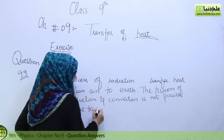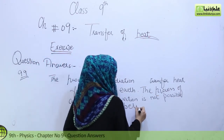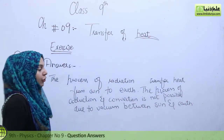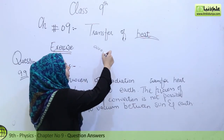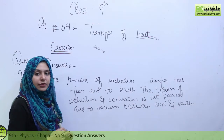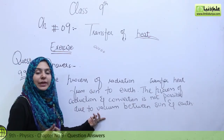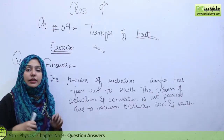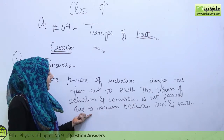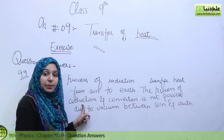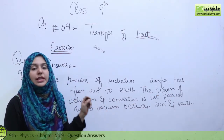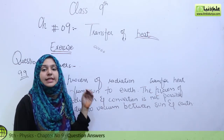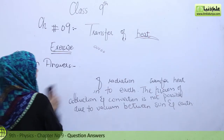Conduction and convection are not possible due to the vacuum between the Sun and Earth. In a vacuum — where all air has been completely removed — there are no molecules, no atoms, no free electrons. Because of this vacuum present between the Sun and Earth, neither conduction nor convection is possible. So the only method left for us to receive heat directly from the Sun is through radiation. That is the answer to 9.9.